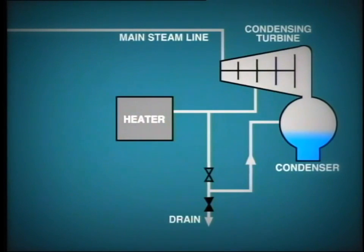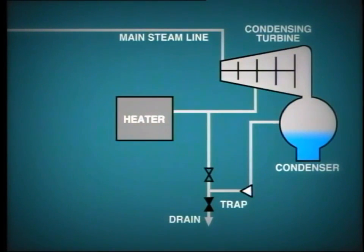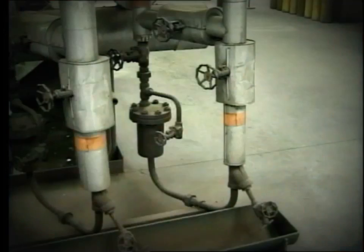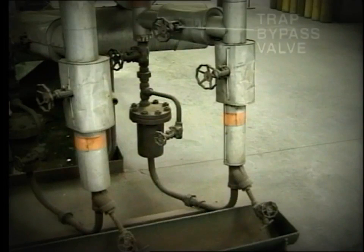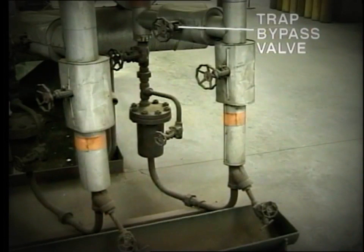Often these extraction line drains are fitted with steam traps which discharge automatically into the condenser. However, during start-up it is good practice to open the trap bypasses to make sure that all of the water is drained from the line.